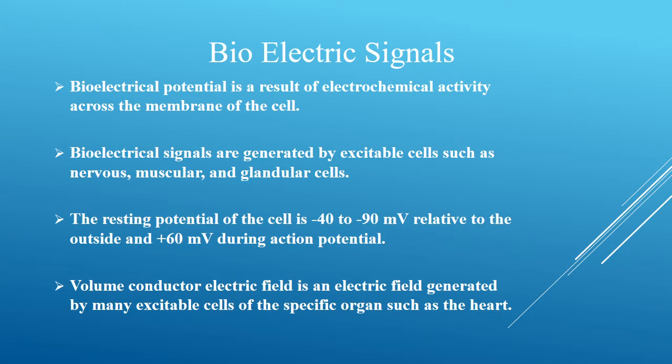These are the ionic voltages produced as a result of electrochemical activity of certain special types of cells such as nerve cells or muscle cells. The cells in the body are encased in a semi-permeable membrane that permits some substances to pass through the membrane. These cells are surrounded by fluids.